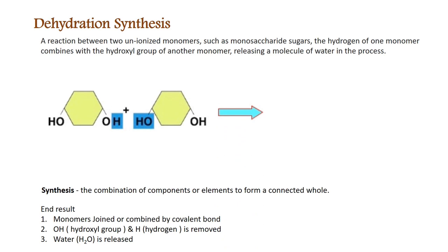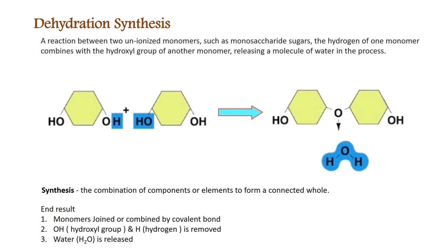After the reaction, a product results: two monomers joined by a covalent bond with oxygen in the middle. The highlighted hydrogen and hydroxyl group — highlighted in blue — now form water, which will be removed. The key word for dehydration synthesis is 'synthesis,' meaning two monomers will be combined and joined by a covalent bond. As they are combined, the hydroxyl group and the hydrogen from both monomers are lost, forming water which is released.